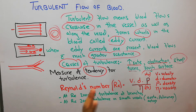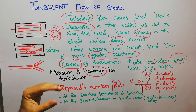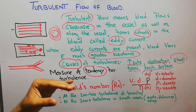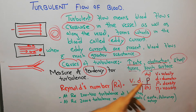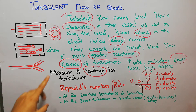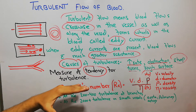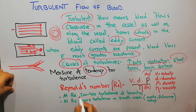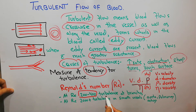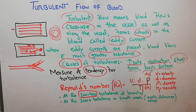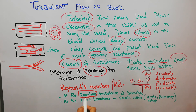The Reynolds number can be used for any fluid to calculate the tendency for turbulence. If the Reynolds number is around 200 to 400 — which is normal in normal arteries — turbulence will occur at branches only, not anywhere in smooth blood vessels. Turbulence in smooth vessels will occur when the Reynolds number exceeds 2000. If the Reynolds number is more than 2000, then turbulence will occur in smooth vessels as well.